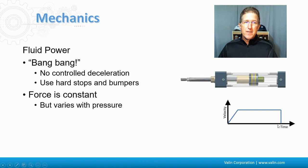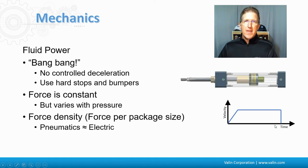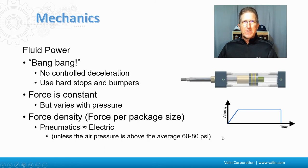The force is constant, which is what causes that acceleration, but it varies with the pressure. So if you need a certain amount of force at 60 psi and you only have 50 psi, you don't get as much force as you'd want. The force density is sometimes important when talking about fluid power. I call it force density because it's the amount of force you get out of the package size of the actuator itself. Pneumatics and electric are about the same. In the usual 60-80 house psi, I have seen applications where someone's using 100 psi on an actuator, and the pneumatics can get a little bit more out of its force density. But usually the average is in that 60-80, and it makes them about the same.